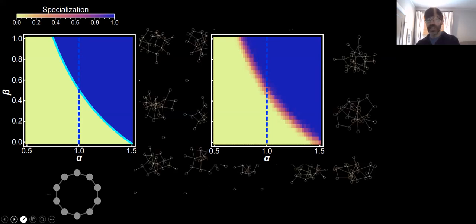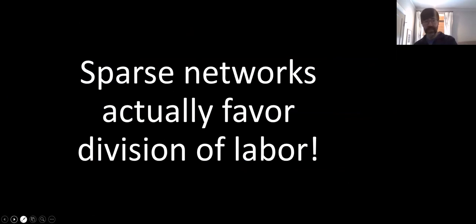So even for these randomly assembled clusters, these randomly assembled networks, as long as you have this sparse interaction topology, you can always end up with this convex specialization. So we think that these sparse networks actually favor the division of labor. And it turns out that for simple multicellular organisms, they often have these sort of sparse interaction topologies. And so this might resolve this open question, why don't we see accelerating returns on investment in these simple systems? Well, maybe those accelerating returns weren't actually necessary.